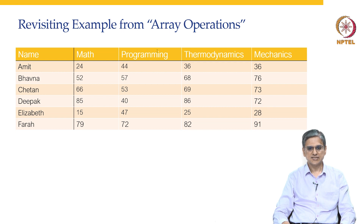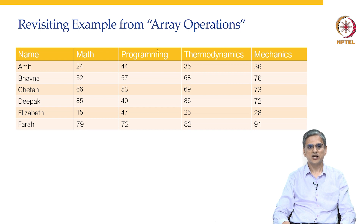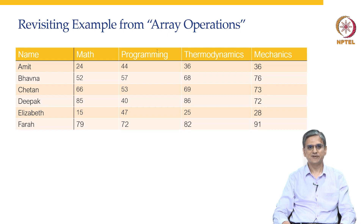Let us revisit this example from array operations. This was the mixed data table that we had come across in the previous lecture. In the previous lecture, we had only looked at the numerical part of this table. Now let us look at the entire data structure in its entirety. This has text as well as numerical arrays in it.